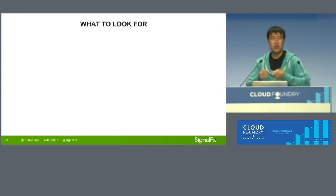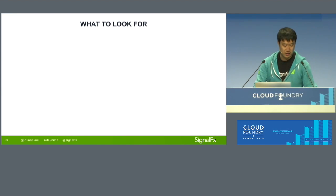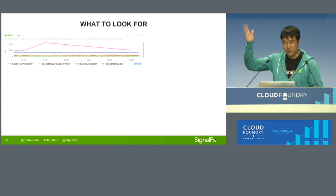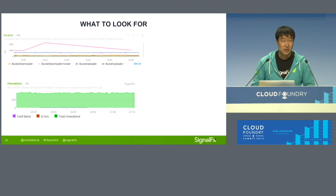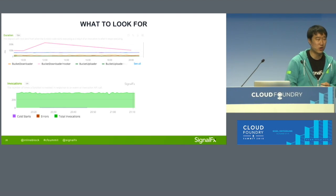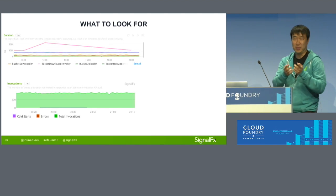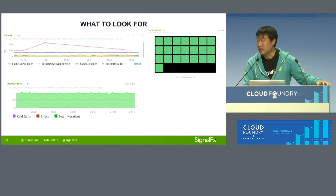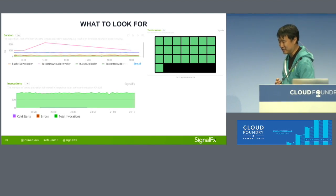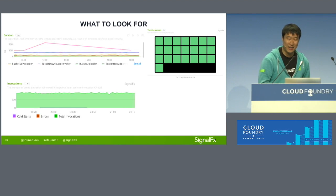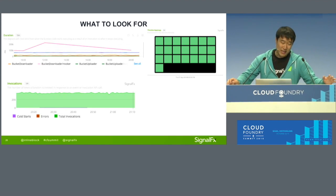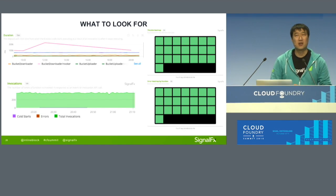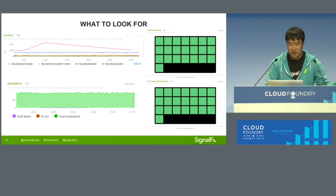What do you typically want to know in your Lambda or serverless environment? Duration is very important — how long your serverless function executed, with a breakdown per function. Invocation count with a breakdown of errors versus total invocations. Cold start count is very important, as I mentioned. Throttling can occur because there's a limit on how many serverless functions can run concurrently at any time for each cloud provider. And errors — you want to know the real-time error rate of your functions.